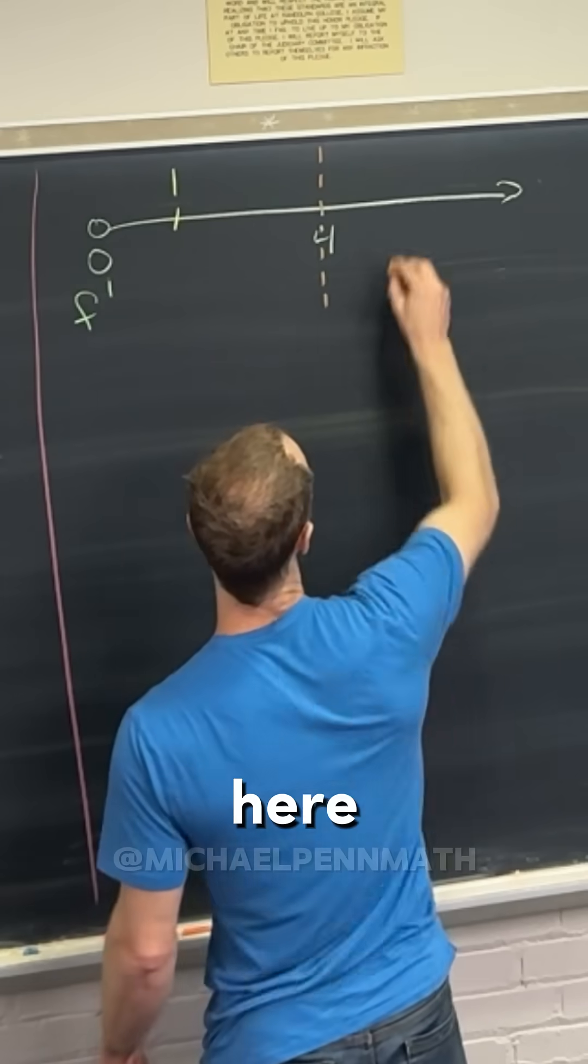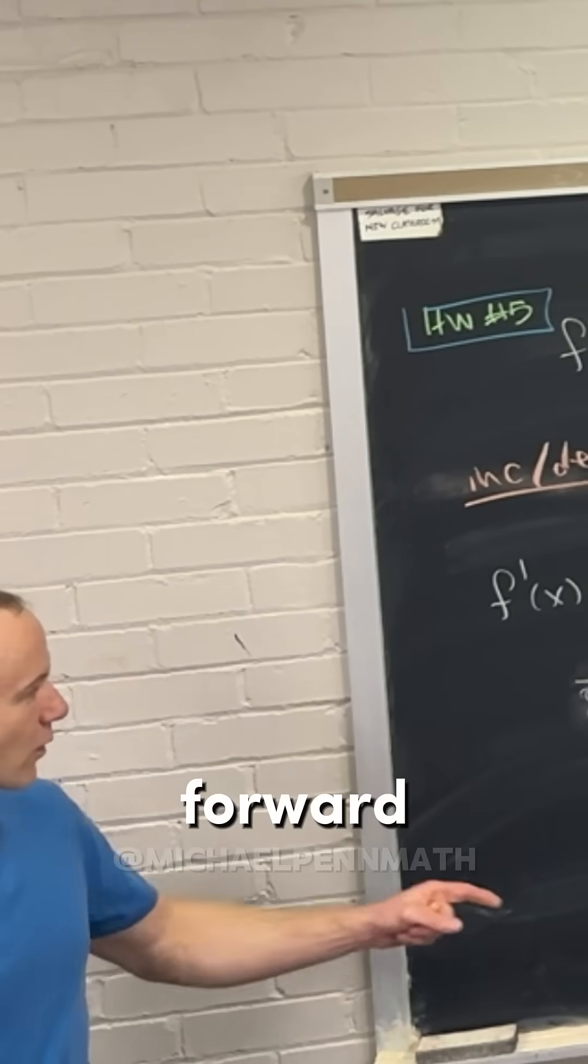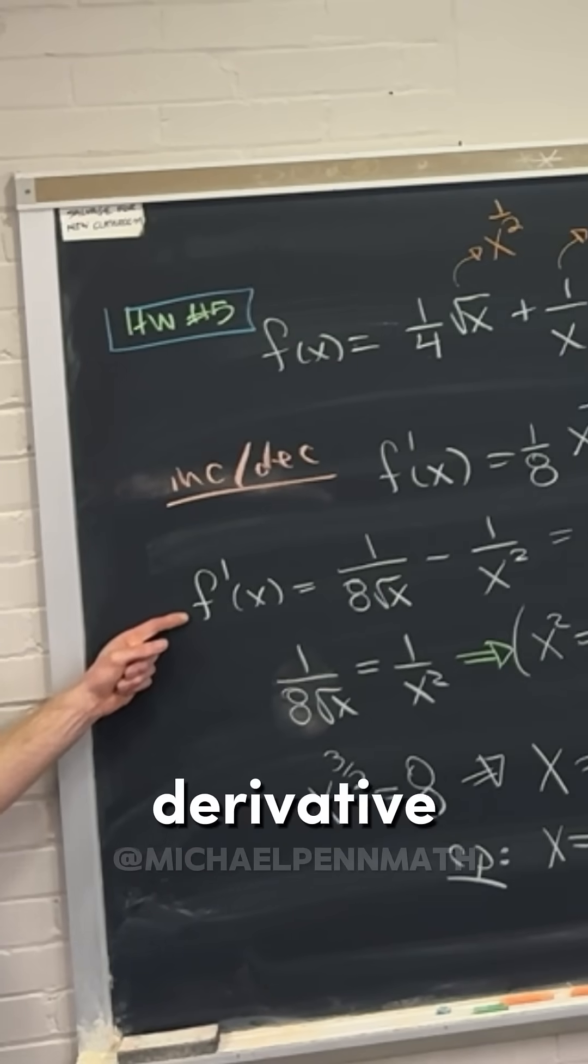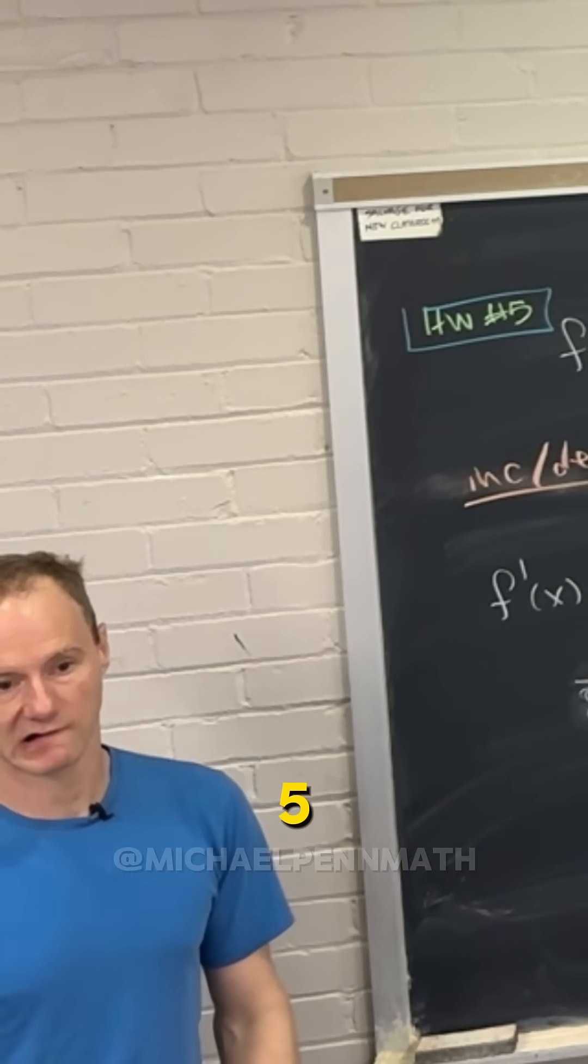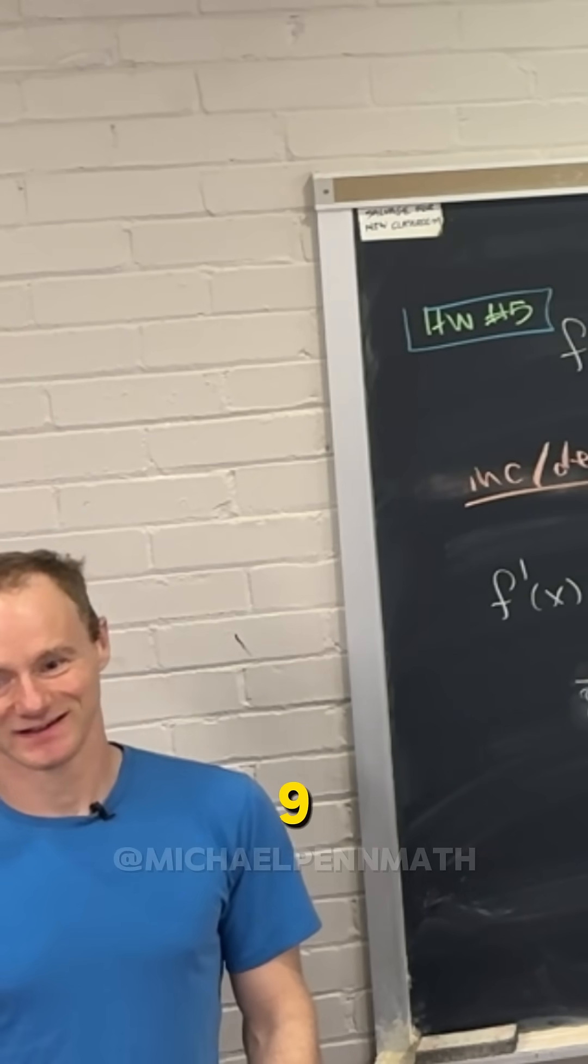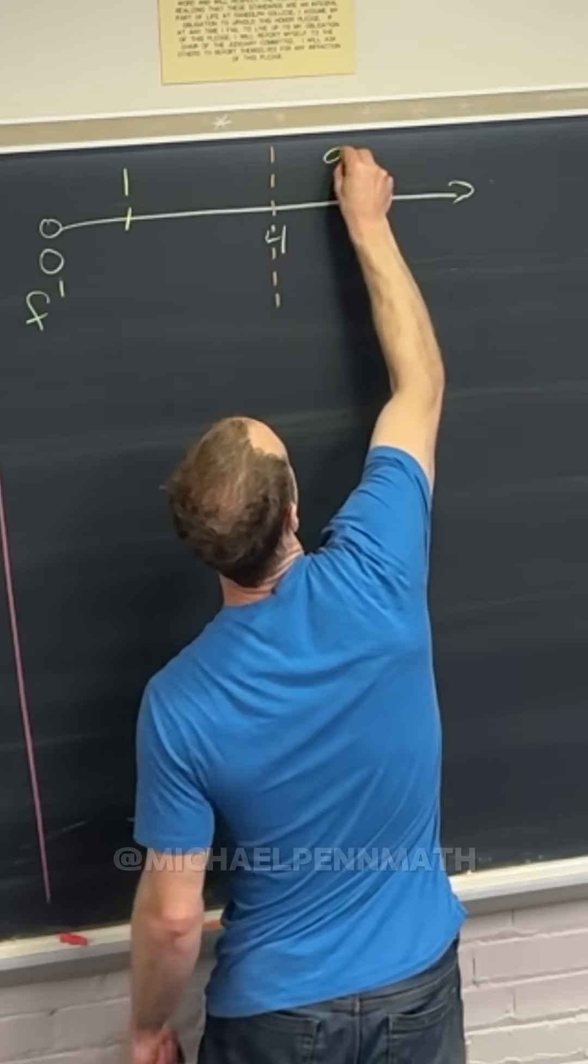And then a test point over here that would be a good choice is... Let's do a little bit of forward thinking and look at the derivative. It's got square roots in it. So who would be a good test point? Yeah, 9, right? The next perfect square. Cool.